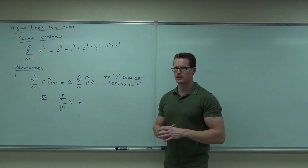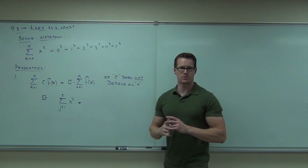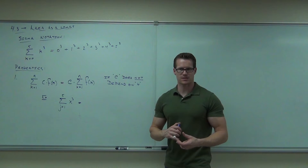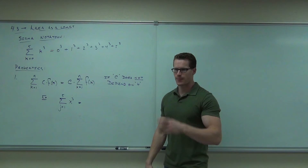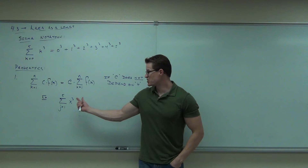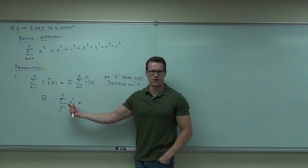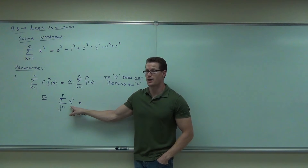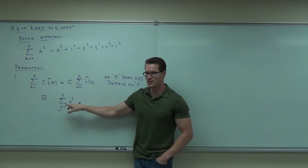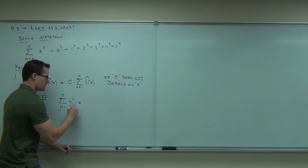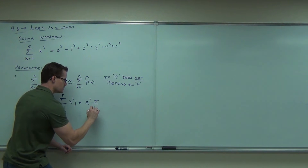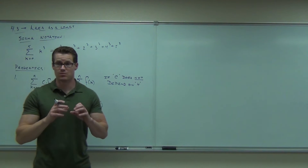Your index is the letter that starts at 1 and goes to 5 — j is your index here. So the function should be in terms of j. Anything depending on j cannot be moved outside. Anything not depending on j is like a constant in this context. What's the function inside? x cubed — is that a j? That has nothing to do with j. If you had x cubed times j, then this would be x cubed times the summation from j equals 1 to 5 of j. Anything not depending on j that's being multiplied — you can take it out.